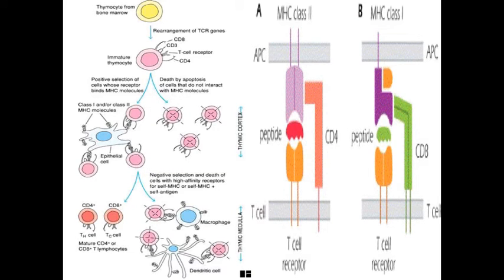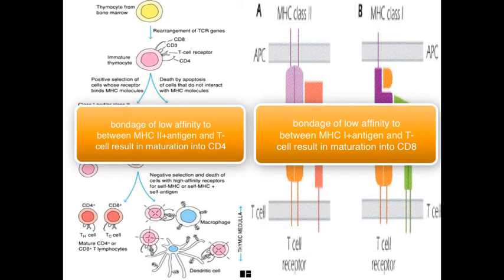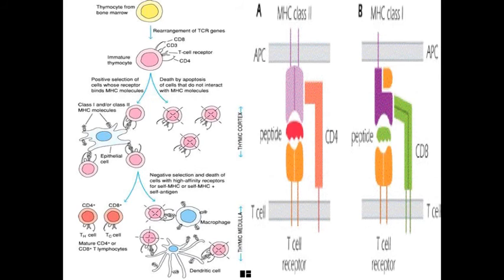As you remember, I mentioned that prior to entrance of the thymus, there are no CDs expressed on the T-cells. But once they are in the thymus, depending on which MHC class they will prefer with the low affinity, this will determine if the T-cells will become CD8 cells, also called the cytotoxic T-cells, or CD4 cells, also known as T-helper cells. The MHC class 1 will help to generate more CD8 cells, while the MHC class 2 will help to generate CD4 cells.